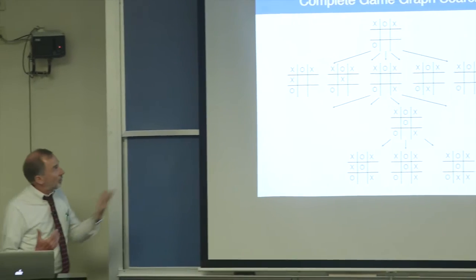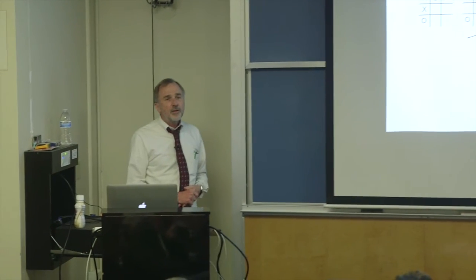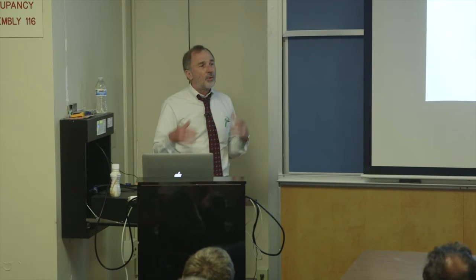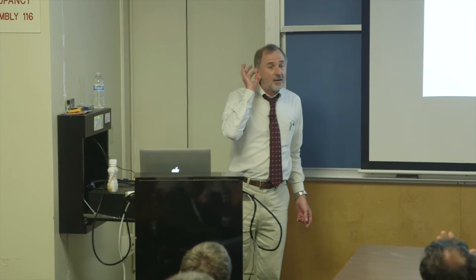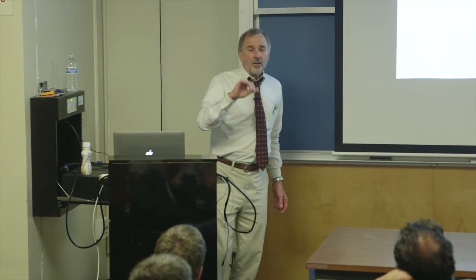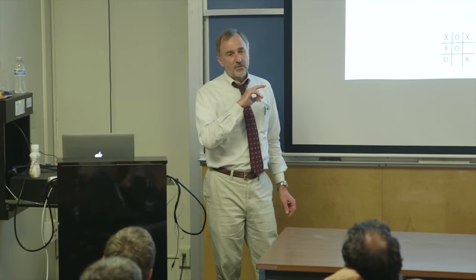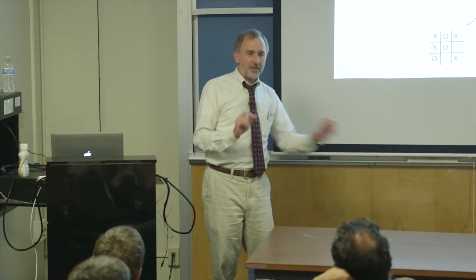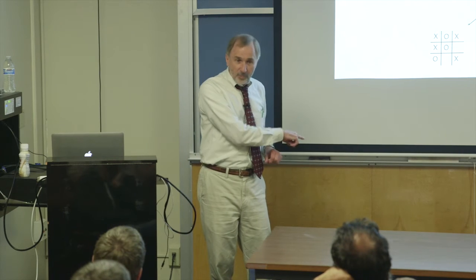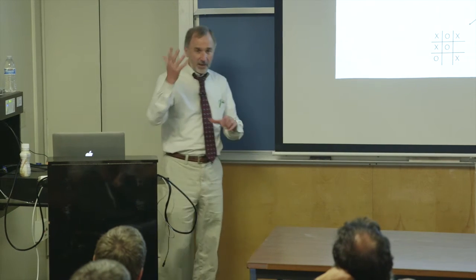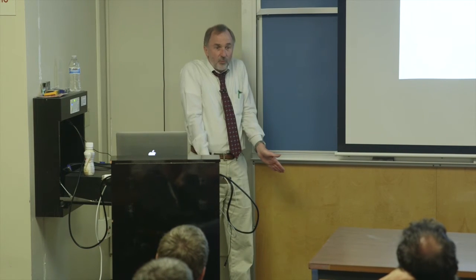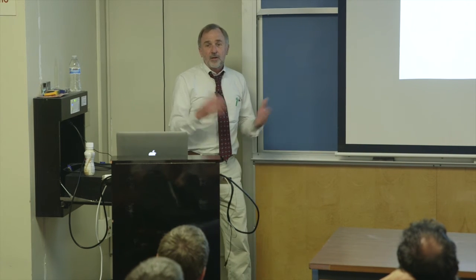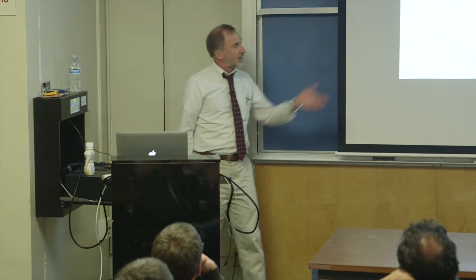The game tree is exactly the same issue as the game graph - it's too big to store or search in any reasonable amount of time. Computers can easily do tic-tac-toe in a fraction of a second, but when you get to more substantive games they can't do this. Typically what happens is you get to a point in the tree where you've searched part of it but haven't finished. Now, how do you decide what to do? How do you choose which of those moves to make?